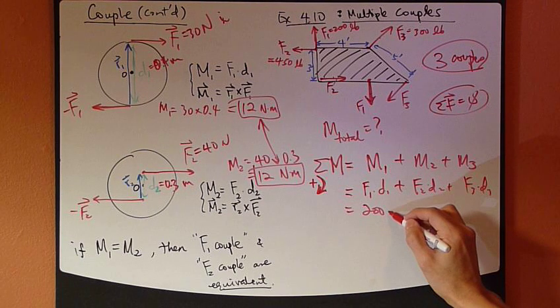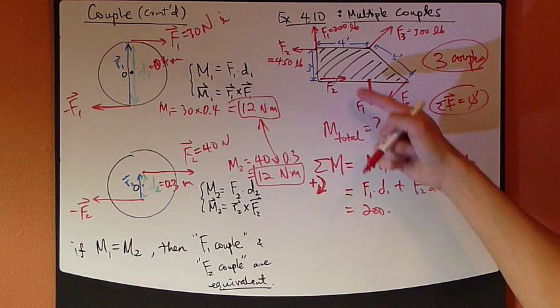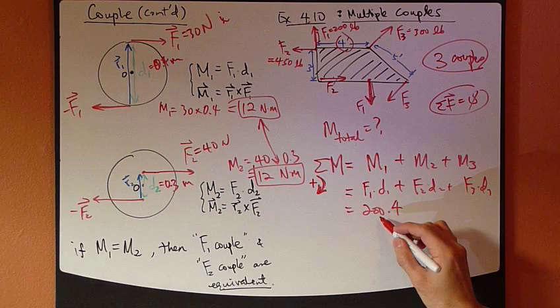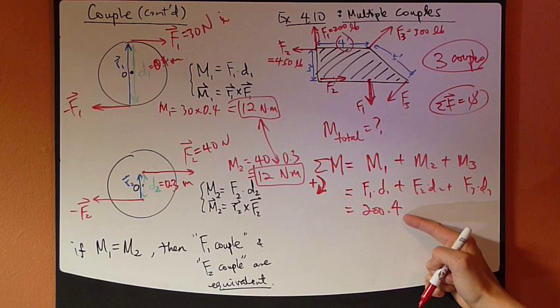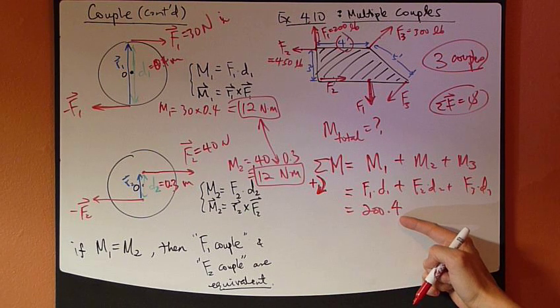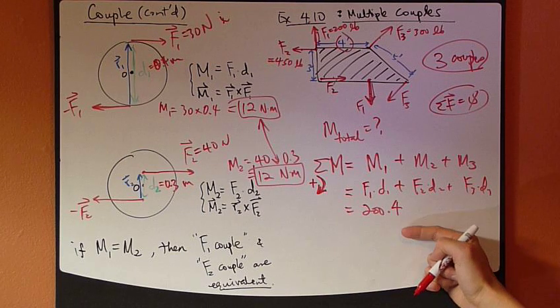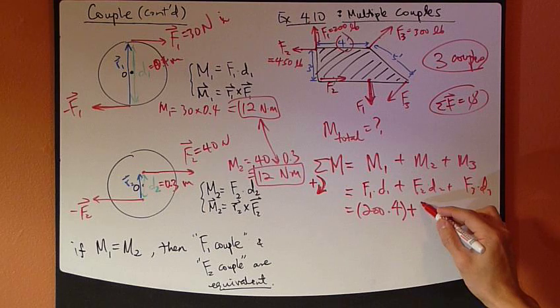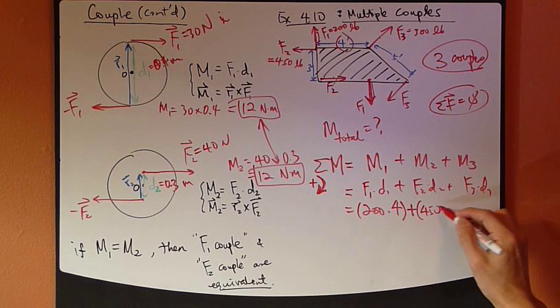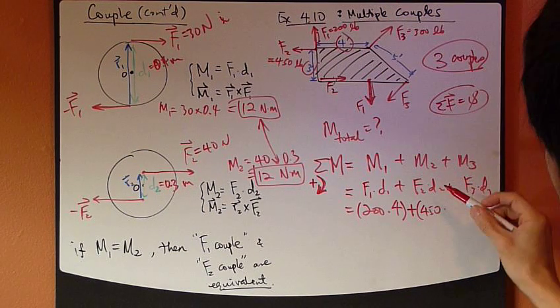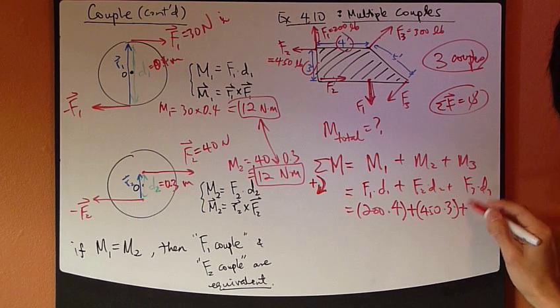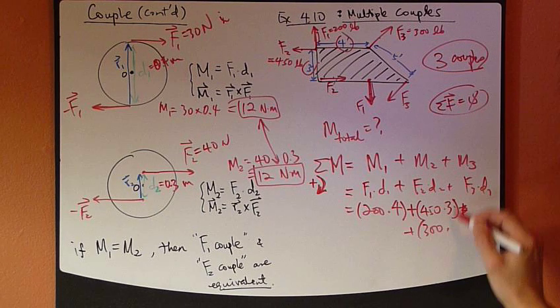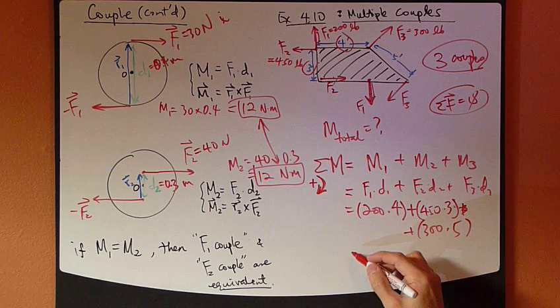M1 is the moment due to the couple F1. So, that's F1 times D1 plus M2 due to F2 and D2 plus F3 D3. So, 200 pounds times D1 is the distance between these two forces, which is exactly 4 feet. Now, 200 is in pounds. This D, 4 is in feet. So, the unit is consistent. It's standard English unit. So, we're okay. No more conversion needed. Then, F2 is 450 pounds times D2 is 3 feet. Plus F3 is 300 pounds times 5 feet between them.